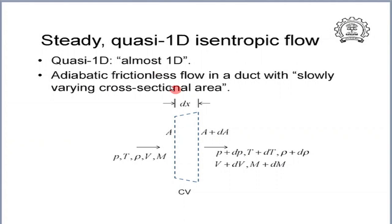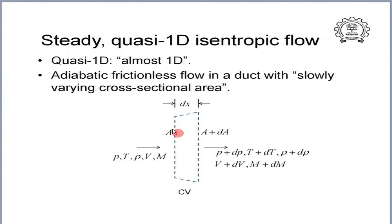What I have shown here is a section of the duct, which I am calling a control volume — a semi-infinitesimal control volume. Semi-infinitesimal means along the flow direction we go an infinitesimal distance dx, but across the cross section we span the entire cross section of the duct. The duct changes its cross-sectional area from A to A plus dA over a distance of dx, which is what I mean by slowly varying cross-sectional area.